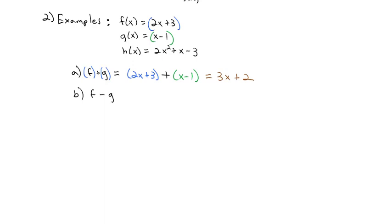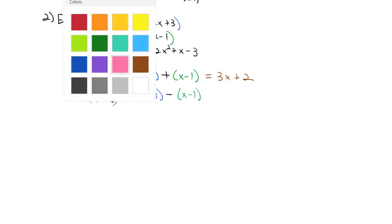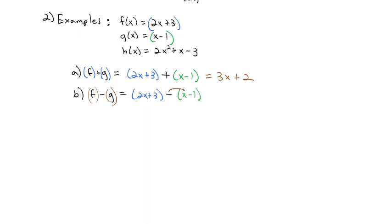We can also subtract the functions: (f − g)(x). Again, it's important to remember to put them in parentheses. So we have (2x + 3) minus (x − 1). That negative needs to distribute onto both the x and the −1, giving us 2x + 3 − x + 1. Combining like terms: 2x − x is x, and 3 + 1 is 4. So (f − g)(x) = x + 4.